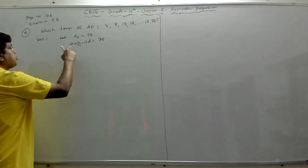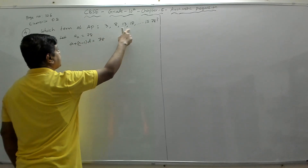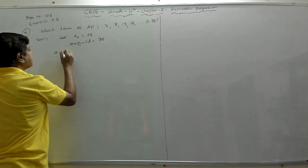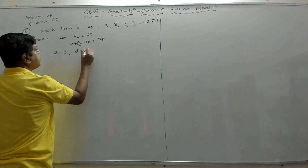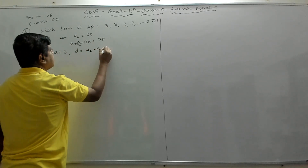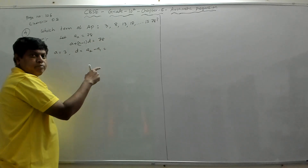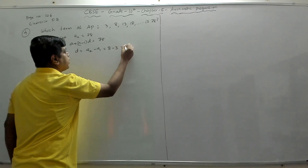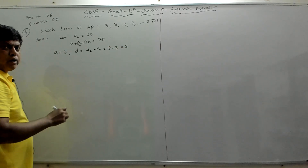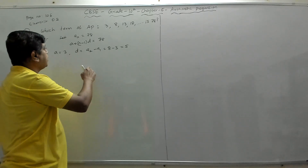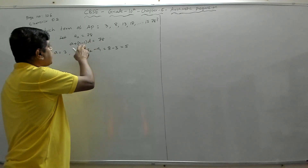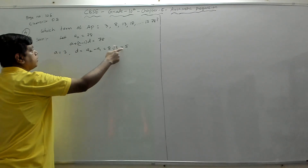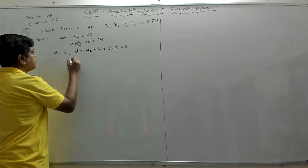Now we substitute the values of a and d. Since we know the AP, the first term a is 3. The common difference d is a2 − a1, which is 8 − 3 = 5. Once we know a and d, we substitute in the equation to find n. So: 3 + (n−1) × 5 = 78.